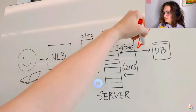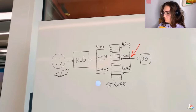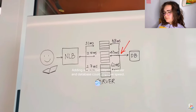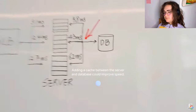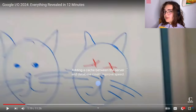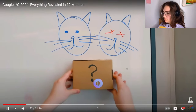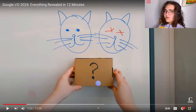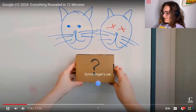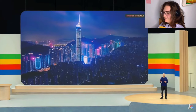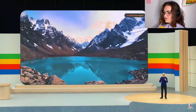What can I add here to make this system faster? Adding a cache between the server and database could improve speed. So now our brainstorming sessions are going to be with AI. What does this remind you of? A mystery box. Schrödinger's cat. Today, I'm excited to announce our newest, most capable generative video model called Veo.